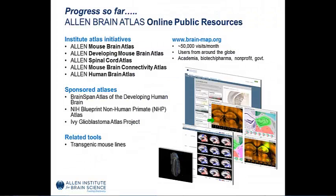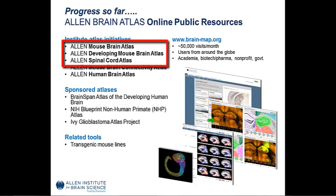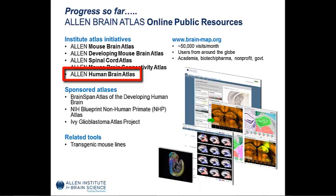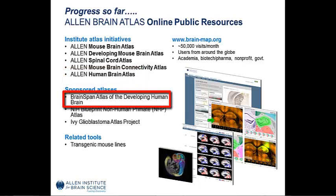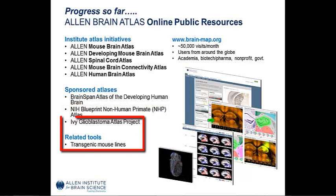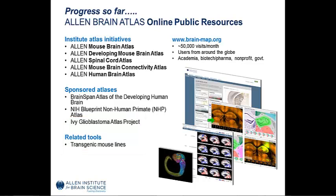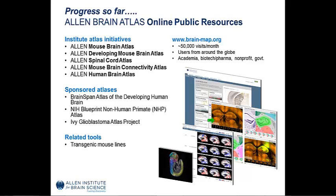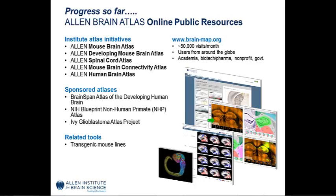These are the resources currently available to you. Our in-situ hybridization databases include the adult mouse atlas, the developing mouse atlas, and the mouse spinal cord atlas. In human gene expression, we have the primarily microarray human brain atlas, as well as the developing human brain atlas, which is an RNA-seq and microarray database. We also have a microarray and ISH atlas in rhesus macaque and smaller projects. Our latest project, departing from gene expression, is the mouse connectivity atlas, which traces connections in the adult mouse brain. Currently we have about 50,000 unique visits per month from all over the globe — from big pharma to industry to academia.